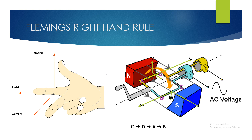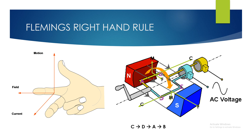To determine current direction, we use Fleming's right-hand rule. Using your right hand, align your fingers so that the thumb points in the direction of motion of the conductor, the index finger points in the direction of the magnetic field lines, and the middle finger gives the direction of the induced current. Applying this to side AB, the middle finger points in a specific direction showing the current direction. Applying it to side CD gives current in the opposite direction. Overall, current flows in the direction C to D to A to B.